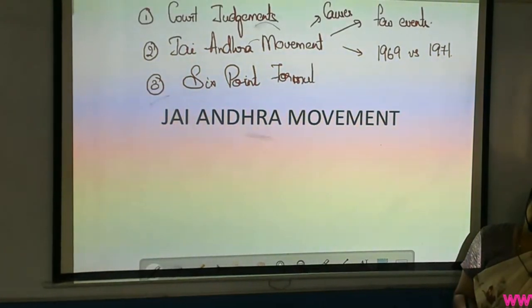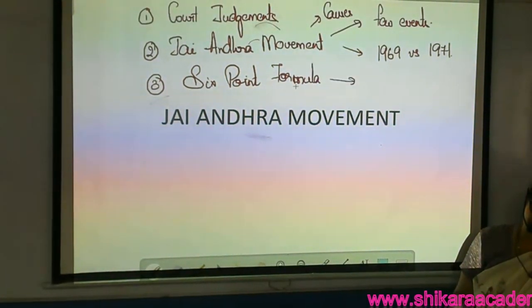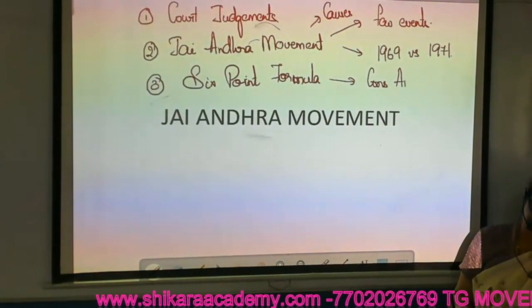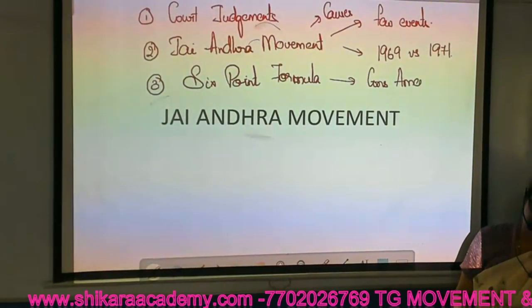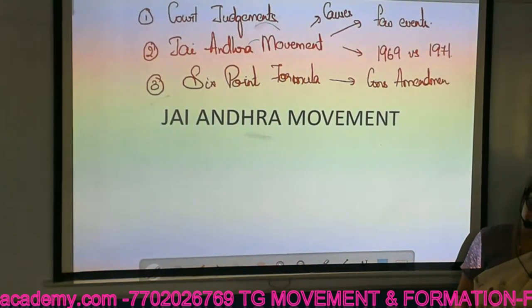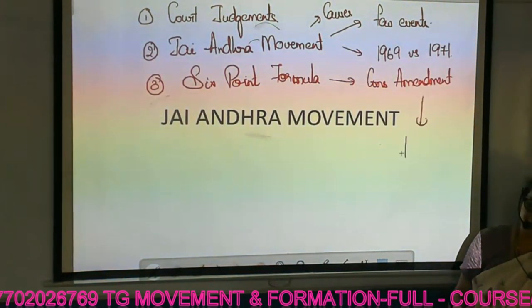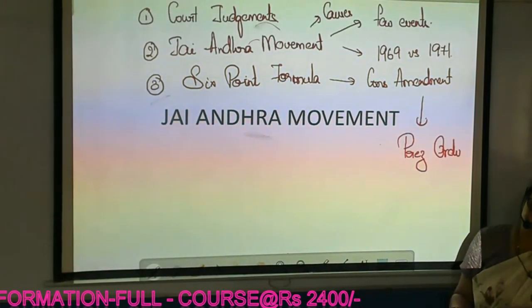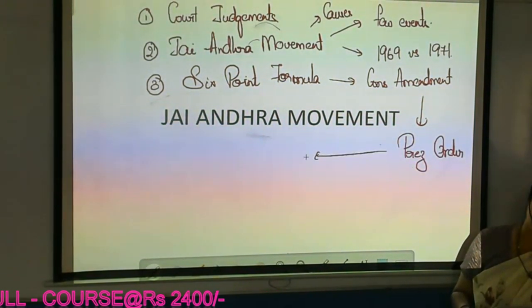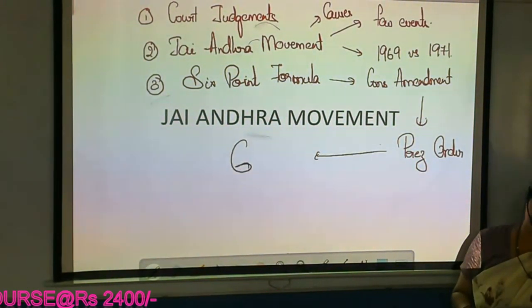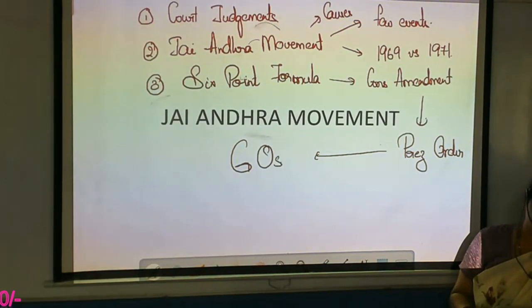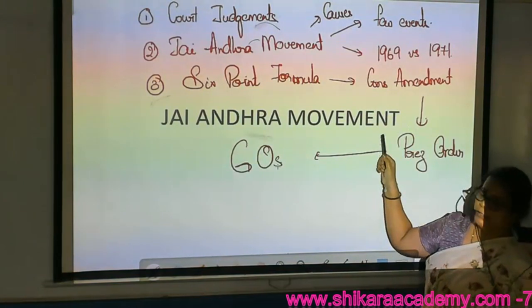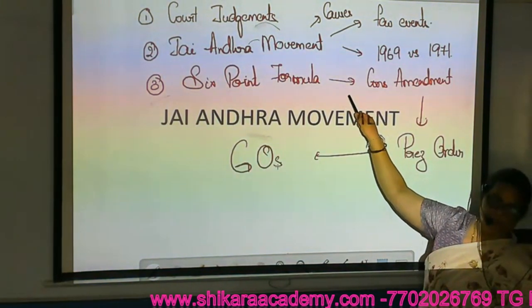The third topic will be the end of the Jayandra movement — the six-point formula, followed by a constitutional amendment, and then a presidential order to implement it, followed by several GOs. We will discuss this whole course towards the end. Today and tomorrow we will complete this. Let me start with the court judgments.